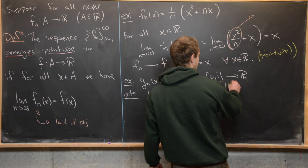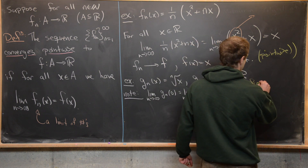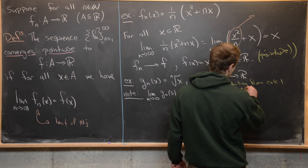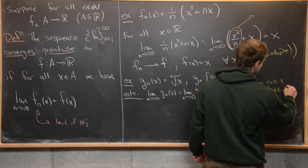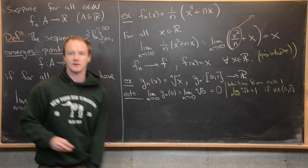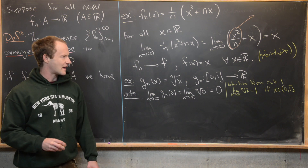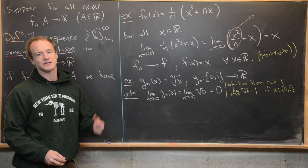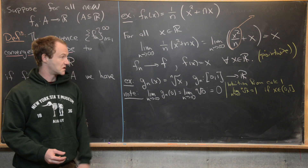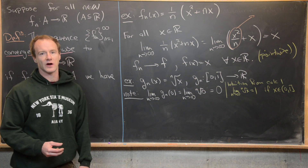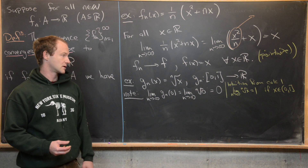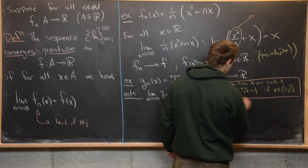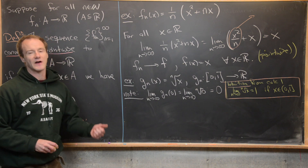Intuition from Calculus 1 tells us that the limit as n goes to infinity of the nth root of x equals 1 if x is in the half-open interval (0, 1]. To see this, consider x = 1/81: the square root of 1/81 is 1/9, the fourth root is 1/3, and continuing like this, the values charge up towards 1. That's our intuition for this limit.